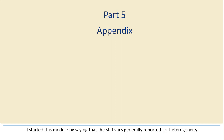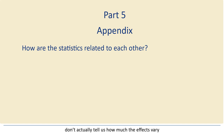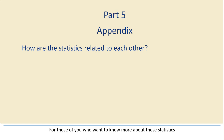Part 5, Appendix. I started this module by saying that the statistics generally reported for heterogeneity don't actually tell us how much the effects vary. I also provided an overview of what the various statistics do tell us. For those of you who want to know more about these statistics and how they are related to each other, the next few minutes features a statistical appendix that addresses that issue.